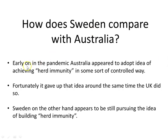How does Sweden compare with Australia? Early on in the pandemic, Australia appeared to adopt the idea of achieving herd immunity in some sort of controlled way, following the British government who had taken to this idea. The UK government gave up on the idea after some mathematical modelling, and Australia followed suit. Sweden, on the other hand, appears to still be pursuing the idea of building herd immunity by simply allowing the population to become infected and hoping people gain some kind of immunity.